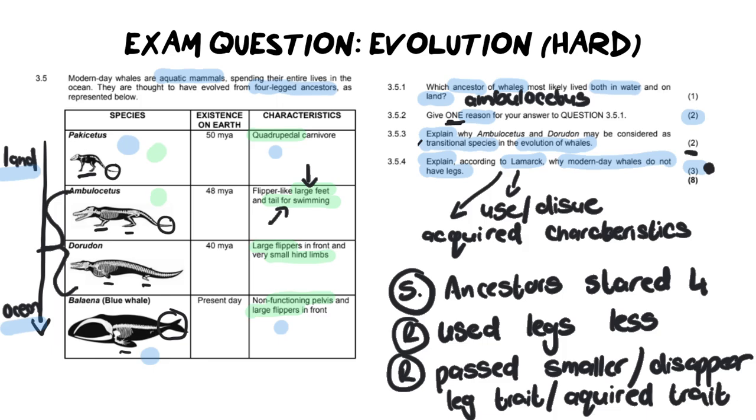Now when I show you the memo, there are actually some other answers that you can give, but you need three of those answers in order to get the marks. My answer is the most straightforward, and again to maybe clarify how it applies to Lamarck, Lamarck would have said yes there were ancestors of whales and they all had four legs. Because they started to use their legs less, because they swam more and they walked less, you can say that, you could probably get a mark for that as well. They will pass on the smaller legs, the disappeared leg trait, or you can say they will pass on the lack of leg trait, the acquired trait, onto their offspring. Remember it goes back to the idea of use and disuse being passed on through acquired characteristics to their offspring.